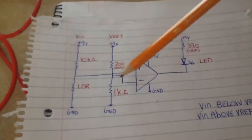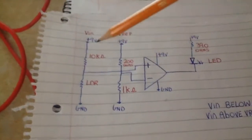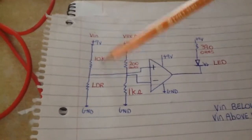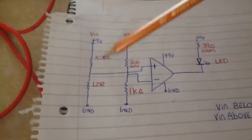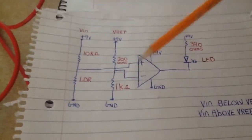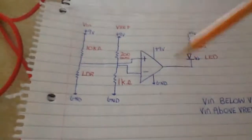On this side we're taking the voltage across this resistor and this light dependent resistor and we're feeding that into the non-inverting pin of the op-amp.